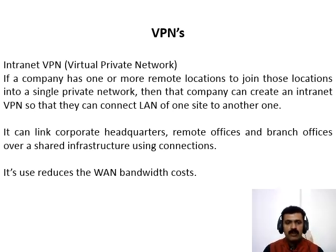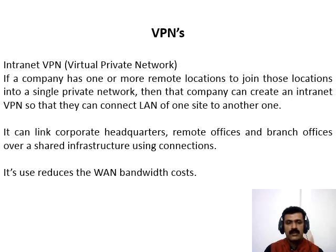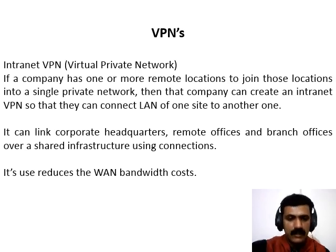The second type is intranet VPN. If a company has one or more remote locations and wants to join those locations into a single private network, then that company can create an intranet VPN so that they can connect the LAN of one site to another. Intranet VPN can link corporate headquarters, remote offices and branch offices over a shared infrastructure using dedicated connections. If you use intranet VPN, it reduces the WAN bandwidth cost. The user can also connect new sites easily by using this network.